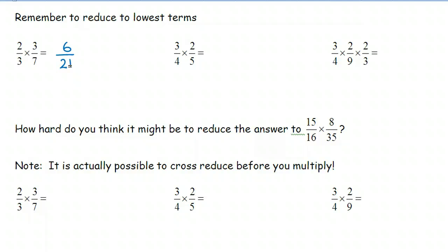But this fraction is not in lowest terms, because both the numerator and the denominator can divide by three. And this gives us, in lowest terms, two over seven.